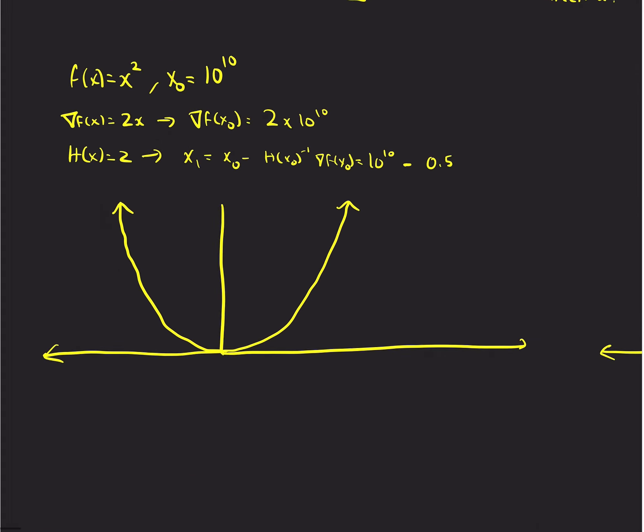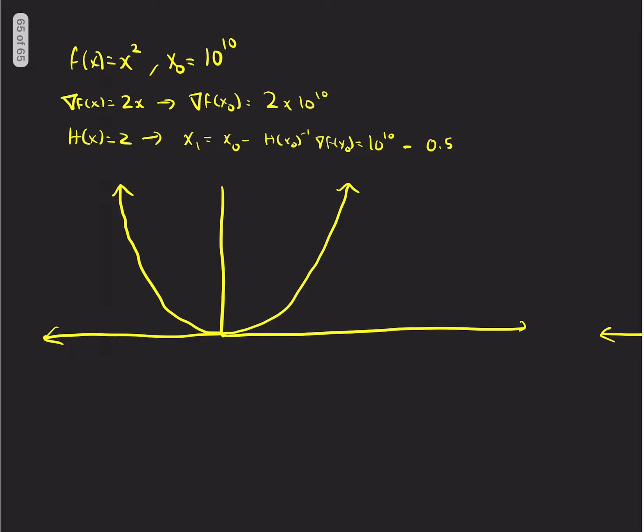So let's say we actually have a quadratic, right? And the approximation is perfect. And I give you a terrible guess here of x naught equals 10 to the 10th. We obviously know that there's a unique global minimum. It's the only local minimum. It's a unique global minimum here at x squared.